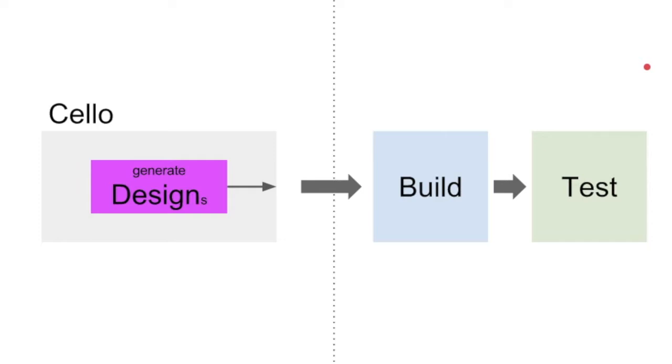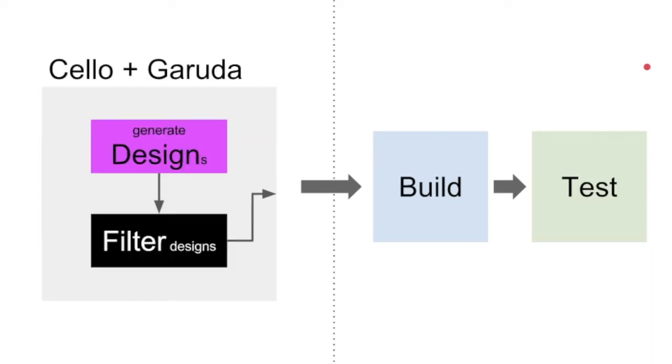This is the workflow used by the researchers in the paper. Basically, they use Cello to generate the designs, and then they build those designs, and they tested those designs. What we propose is the incorporation of a new module to the Cello architecture that basically filters design generated by Cello in two different categories, expected to work or expected to fail.